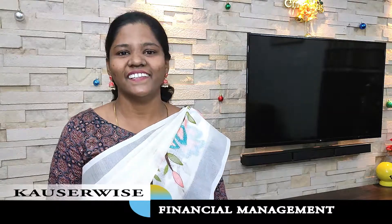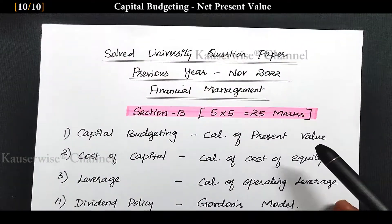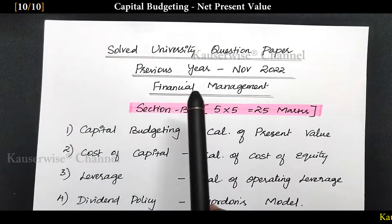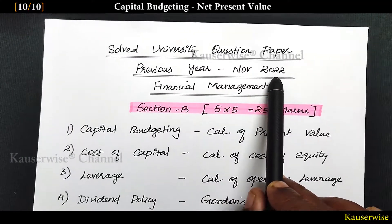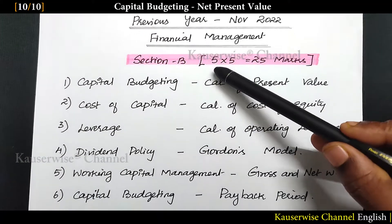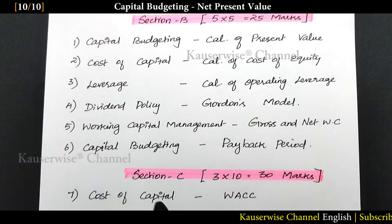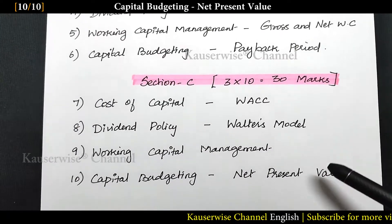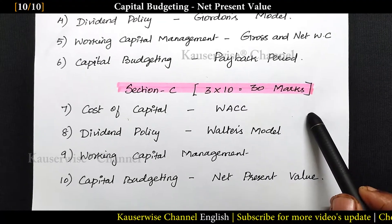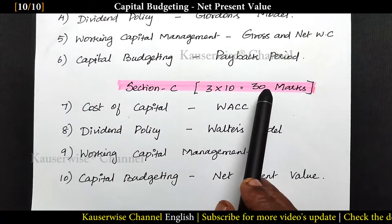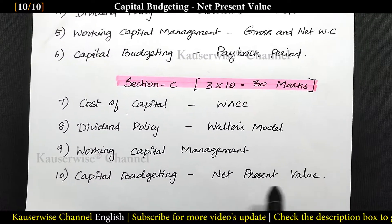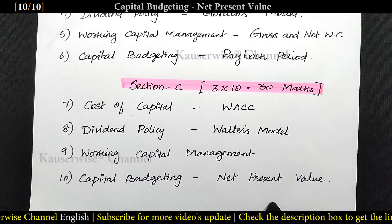Hi, welcome to my channel. This is Kouser Weiss and this is the continuation video of solving previous year university question paper, that is November 2022 financial management. In that we are solving section B 5-mark questions and section C 10-mark questions. You can find the playlist link in the description box. In this video we are going to solve section C, the last question: computation of net present value under capital budgeting. Now let's get into the video.